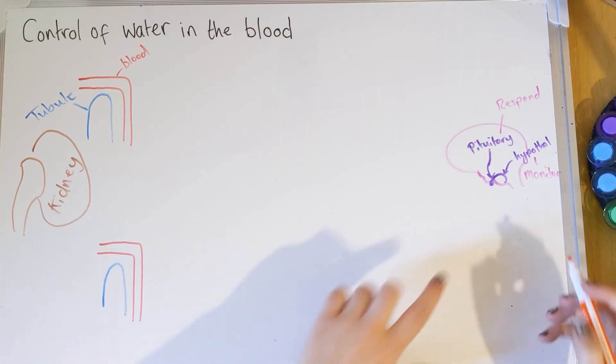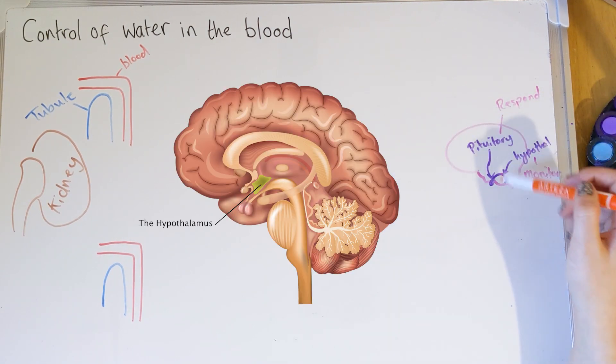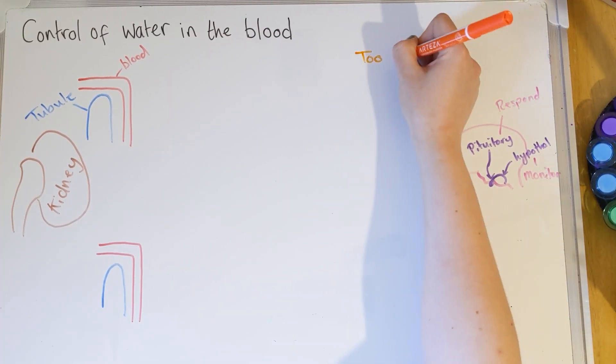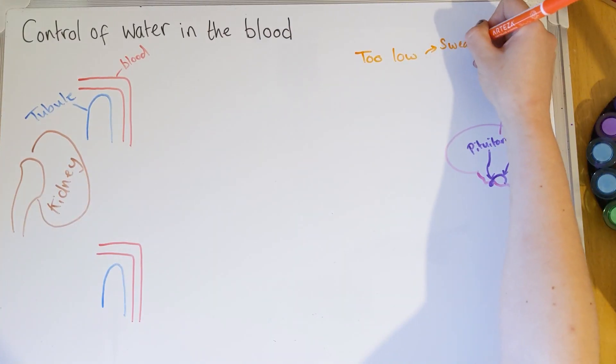Let's look at what happens when the concentration of salts in your blood is too high, or in other words the water content in your blood is too low. As blood flows through the hypothalamus, it's always detecting how concentrated the blood is. Once it detects the blood is more concentrated than usual, that could be because it's hot and you're sweating, or you're not drinking enough fluids.